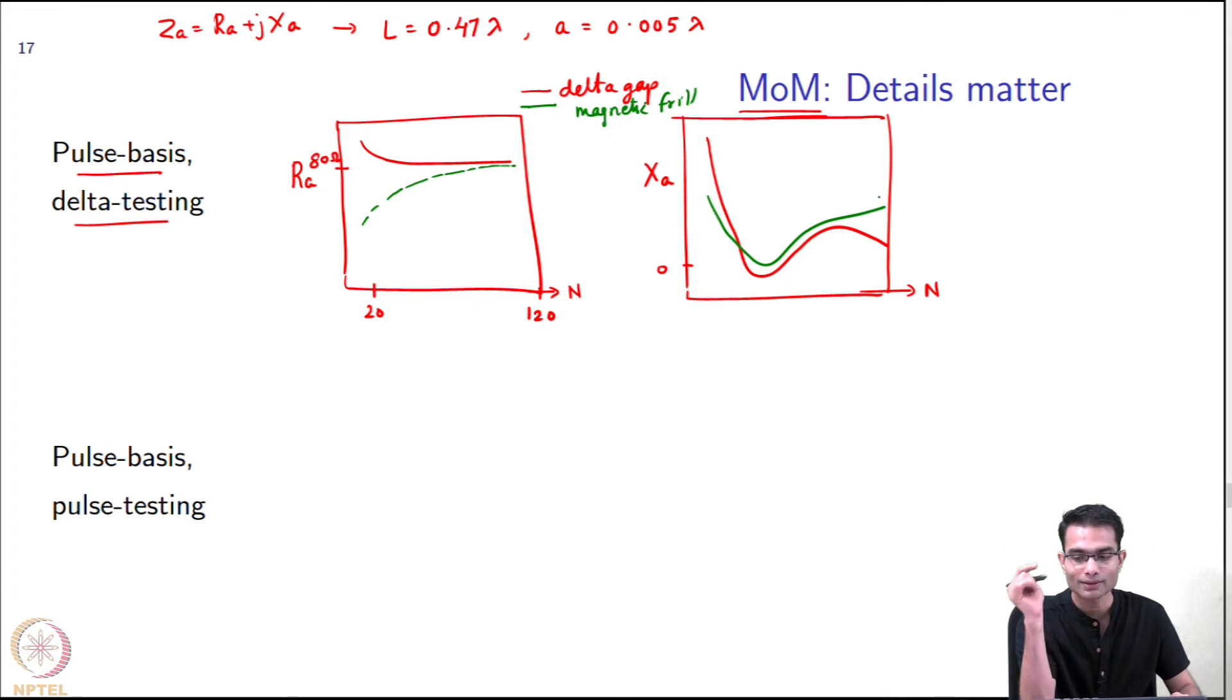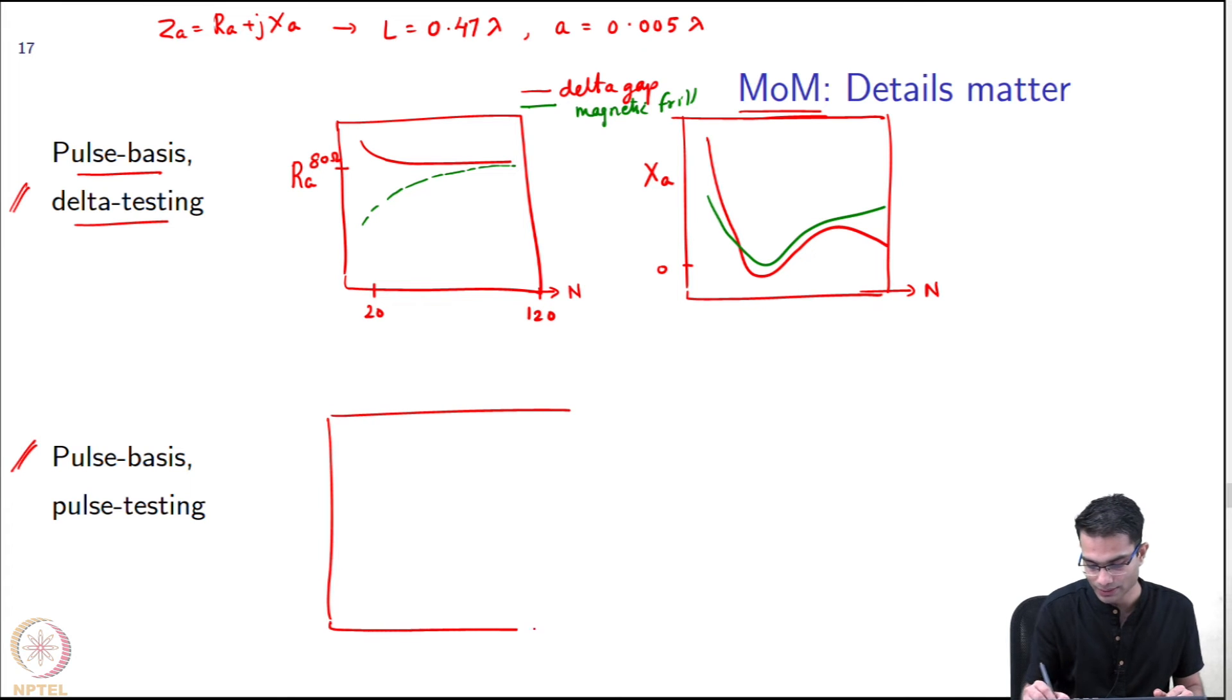This person may come back to you and say your CEM is useless, and that would almost be correct, except that the point I am trying to make here is that the choice of MOM makes a huge difference. This is what we did, the simplest way of doing MOM: pulse basis delta testing. Then you feel a little offended, your results are not looking good. So you say let me do something a little bit more accurate. I will do pulse basis and pulse testing, like a Galerkin thing.